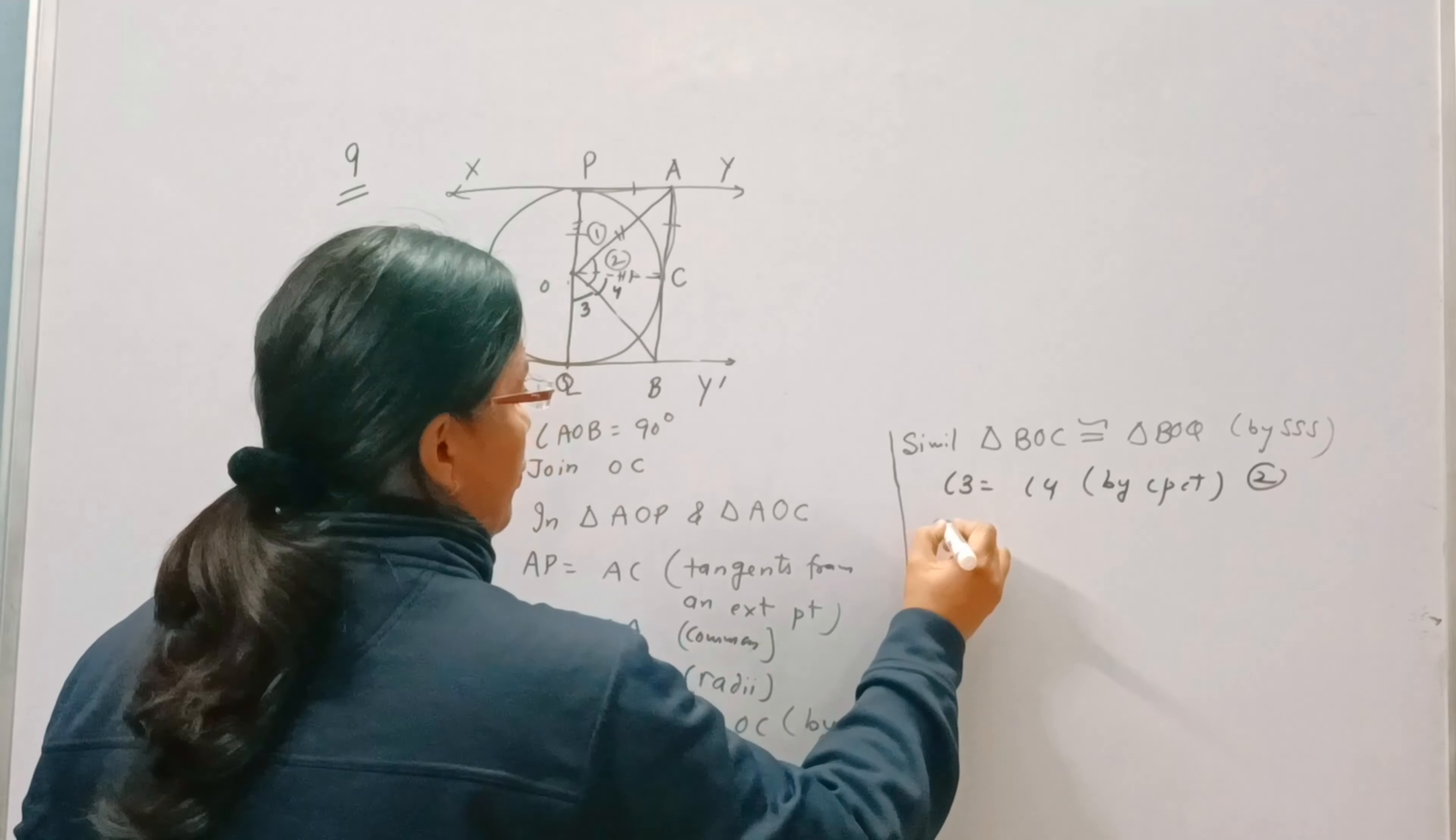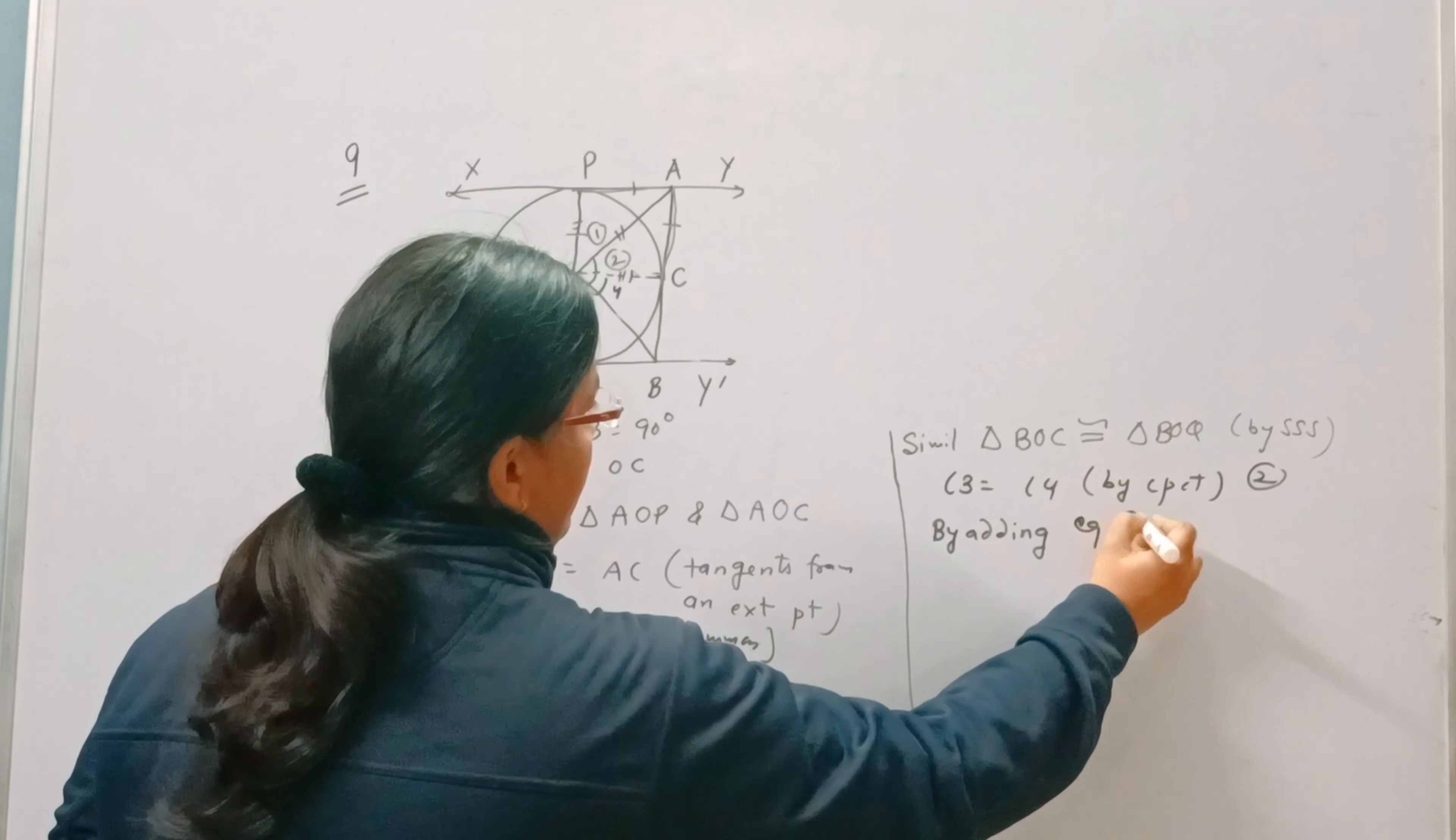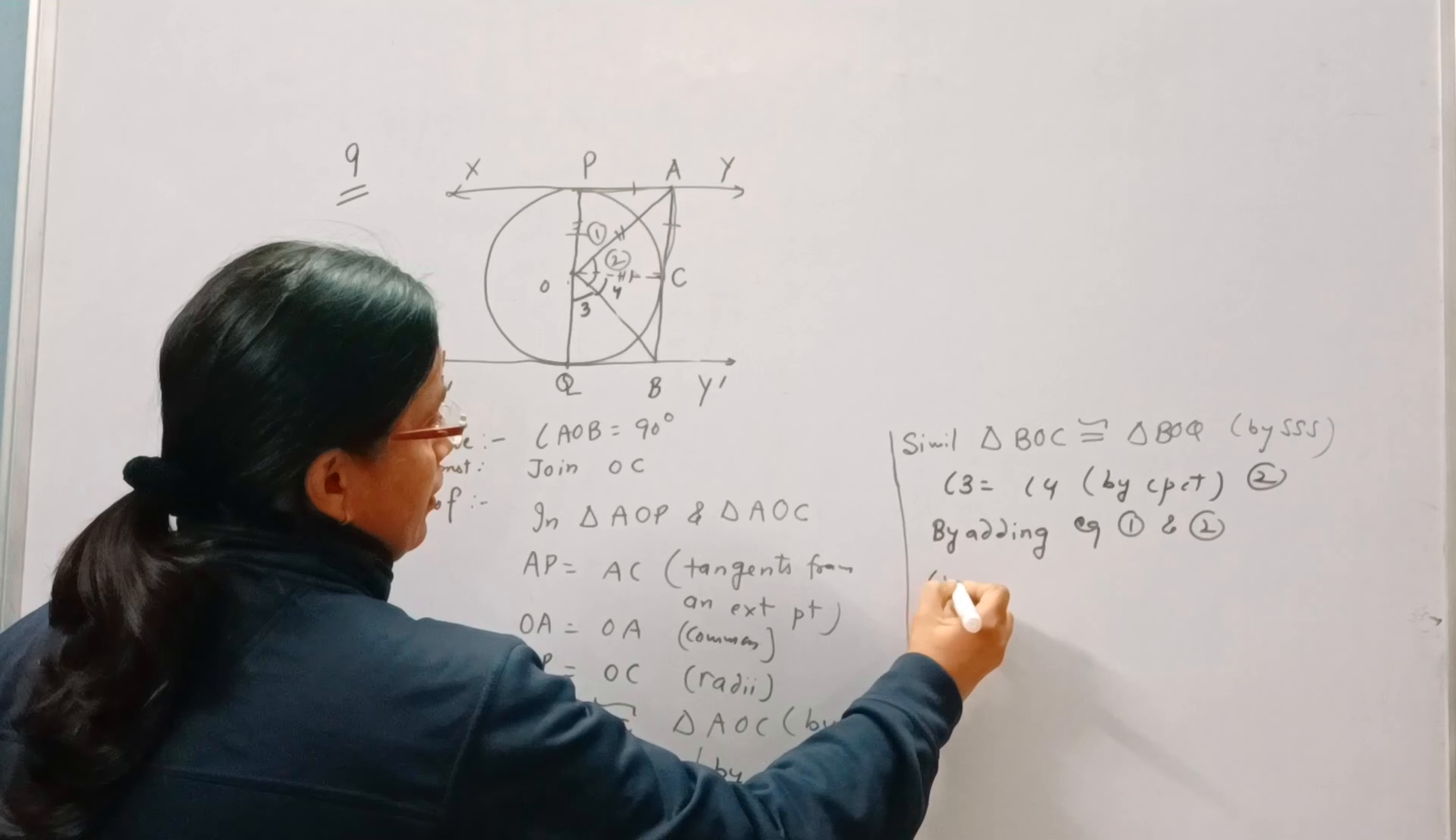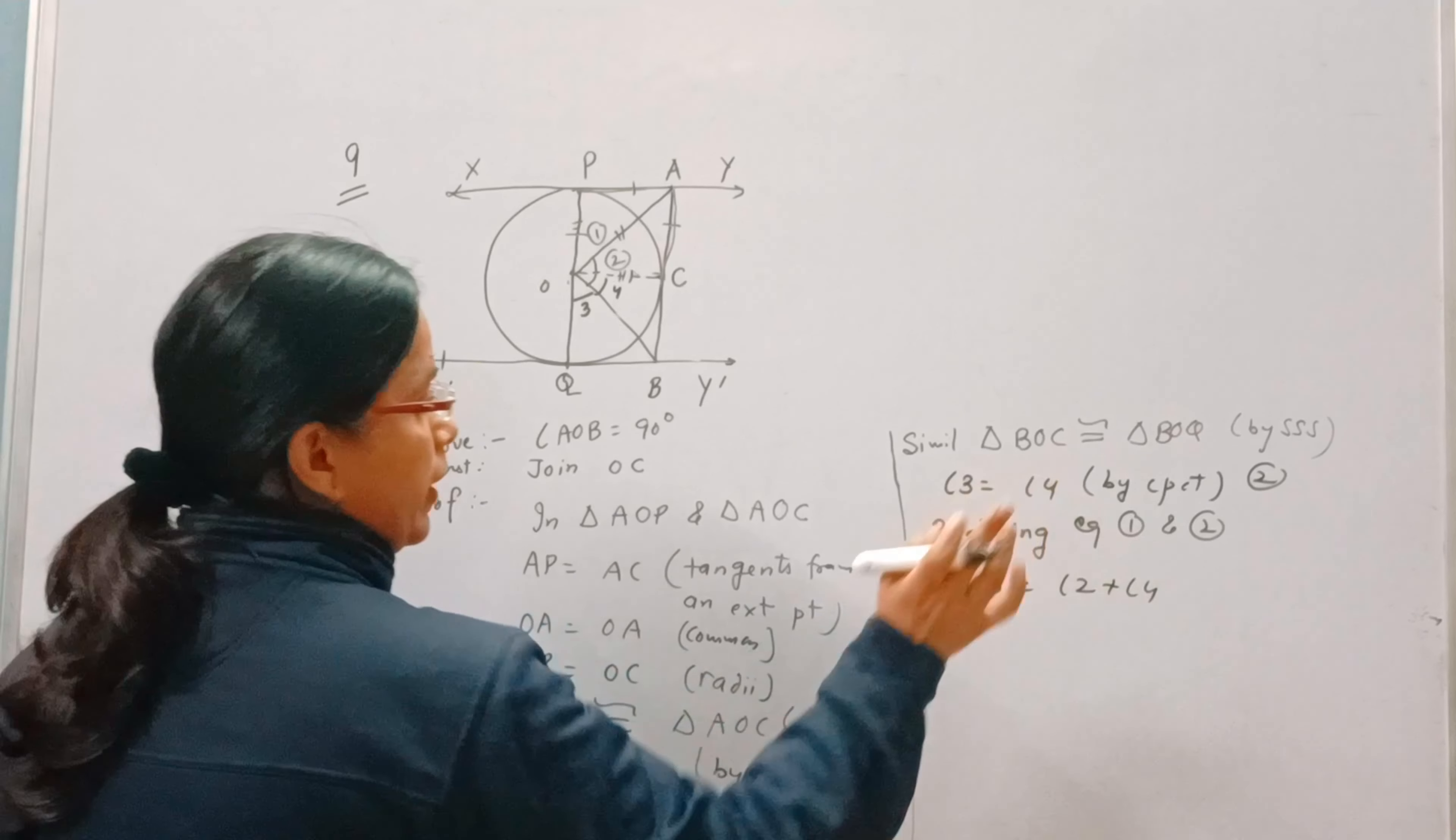By adding equation 1 and 2, just add the two equations. What will happen? Angle 1 plus 3 will become equal to angle 2 plus angle 4.